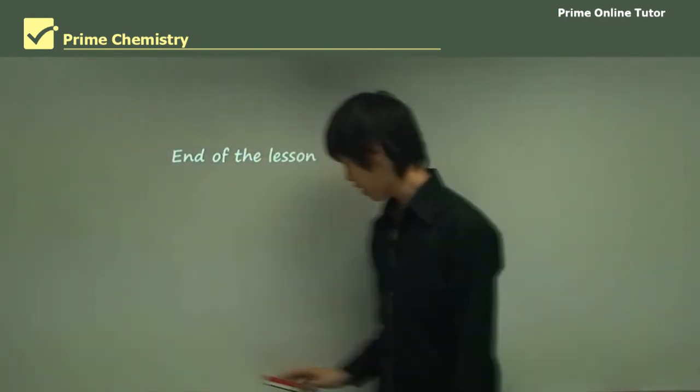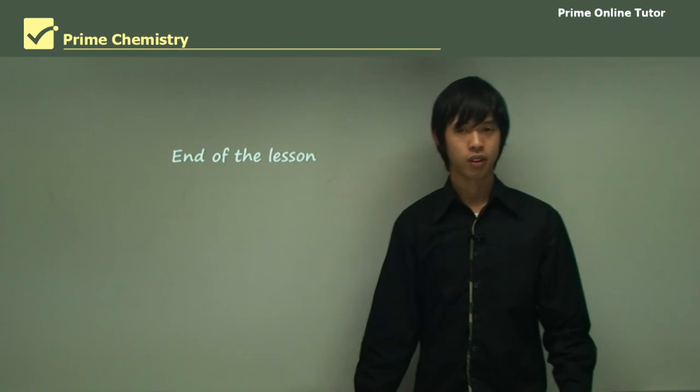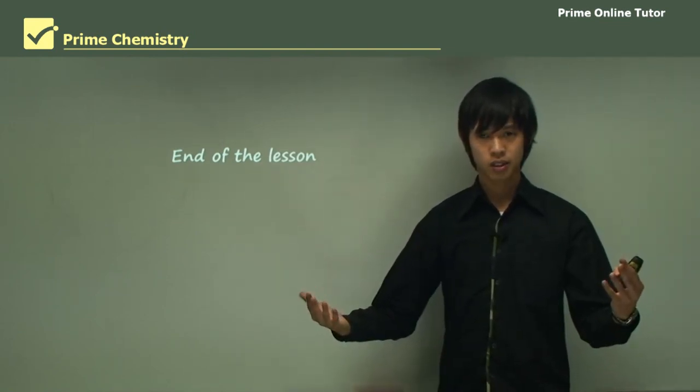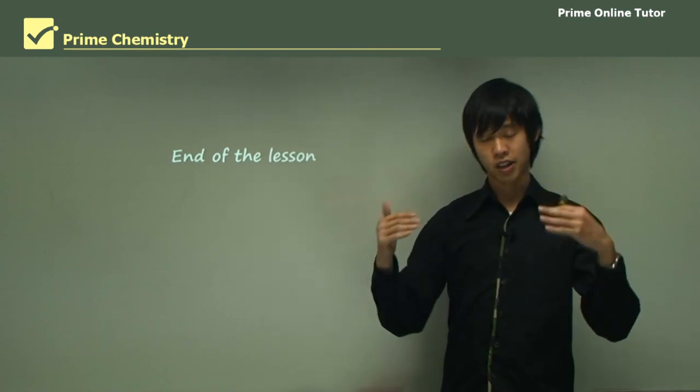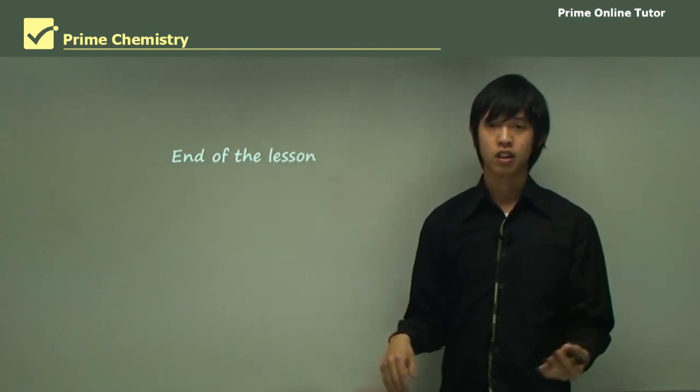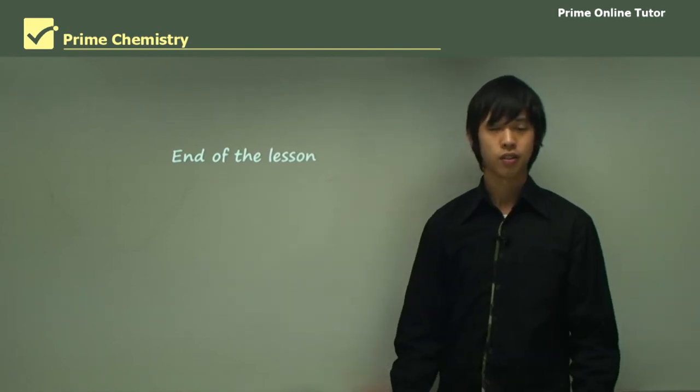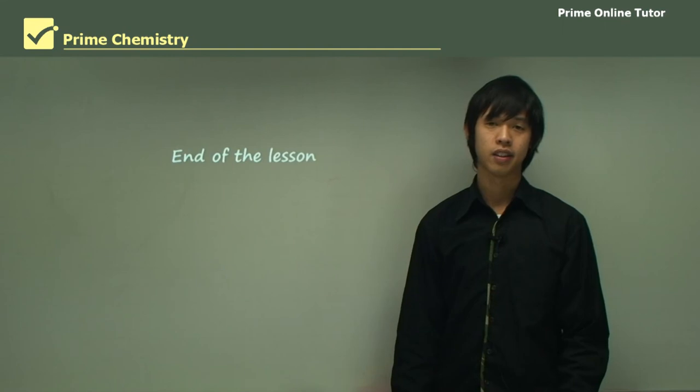This wraps up today's lesson on carbon and its allotropes. We've learned about what an allotrope is and what the three major allotropes of carbon are. Hopefully you've learned something useful about carbon and its allotropes and what they're used for. I look forward to seeing you at the next lesson.